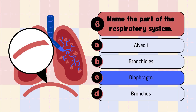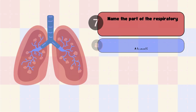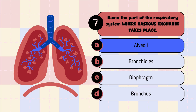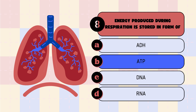The answer to question 6 is option C, diaphragm — the diaphragm is highlighted here, lying just below the lungs. The answer to question 7 is option A, alveoli — alveoli is the part where the actual gaseous exchange takes place during respiration. The answer to question 8 is option B, ATP — that is adenosine triphosphate, the form in which energy produced is stored.